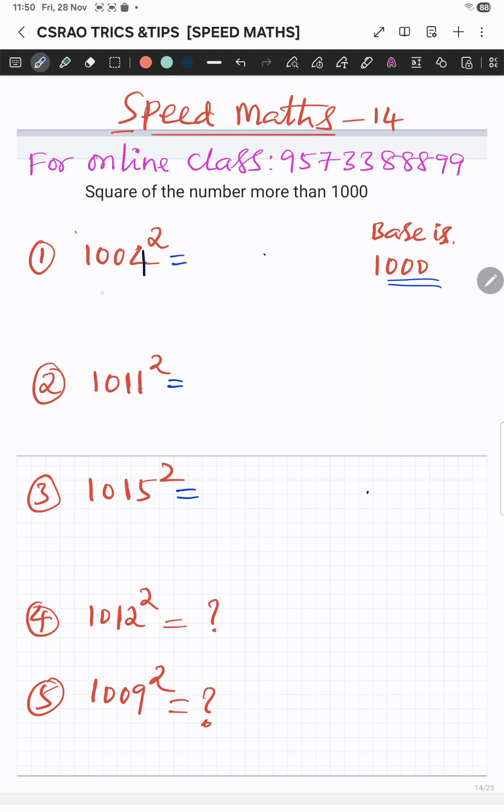Now here, how much is it more than thousand? It is zero zero four, and add them: one zero zero eight. And square of the difference, this one is zero one six. Okay, that is the first one right.